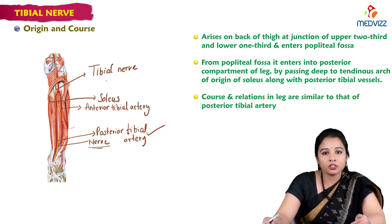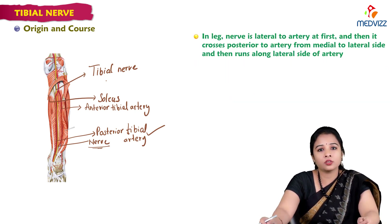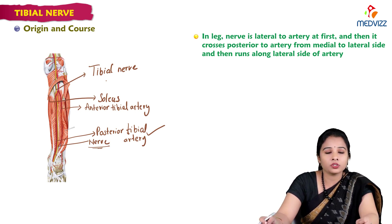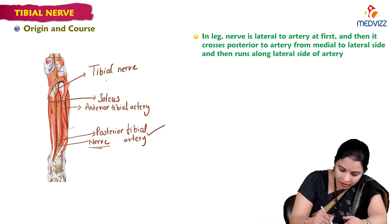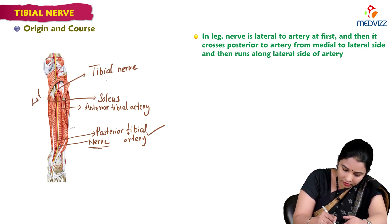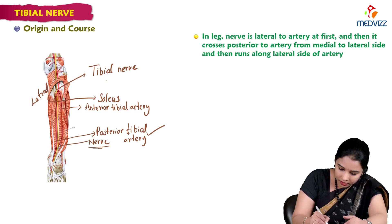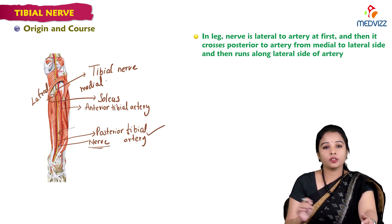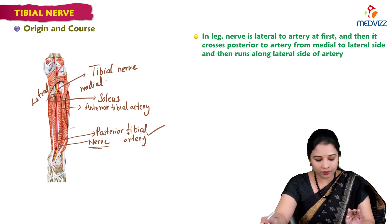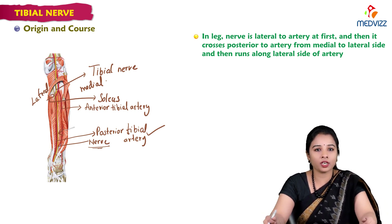In the leg, the nerve is lateral to the artery initially, and then it crosses posterior to the artery from the medial to the lateral side. You can see that first it lies lateral, and then it crosses and lies along the medial side. That is the course of the tibial nerve — running along with the posterior tibial artery.